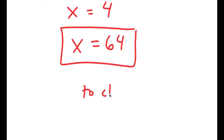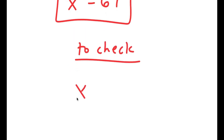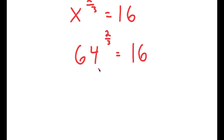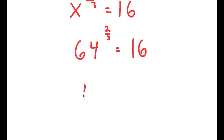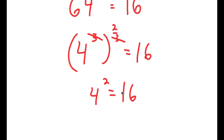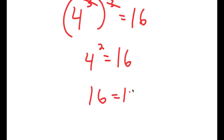Now I'm going to check to see if this is right. My original equation was x to the power of 2 over 3 is equal to 16. With x equals 64, I get 64 to the power of 2 over 3 is equal to 16. Now 64 is 4 to the power of 3, so I get 4 to the power of 3 to the power of 2 over 3, and these cancel out, giving 4 squared equals 16. And 4 squared is 16, so 16 equals 16. The solution is confirmed.